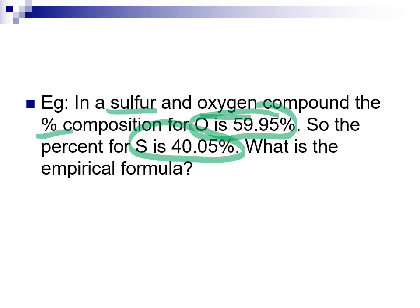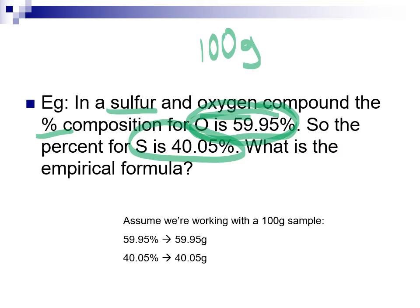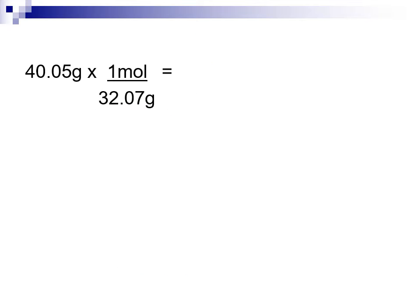We don't have masses yet — we have percentages. But if we assume 100 grams of this sample, then we would have 59.95 grams of oxygen and 40.05 grams of sulfur. So when we have percentages, we do effectively have the masses for a particular assumed amount. We have 40.05 grams of sulfur; its molar mass is 32.07, so the grams cancel out and we get our moles of sulfur.